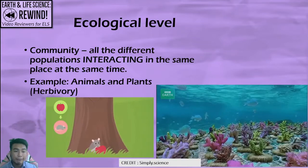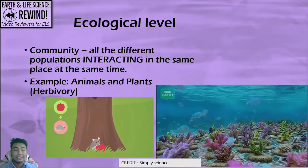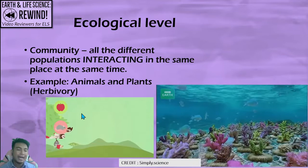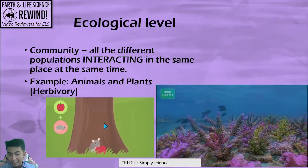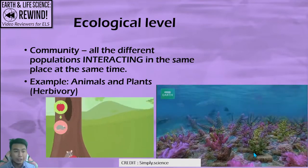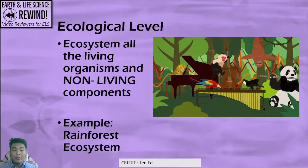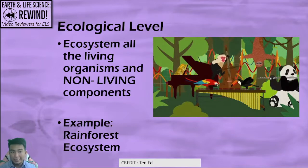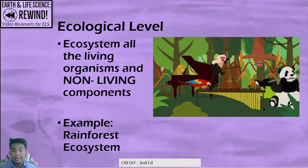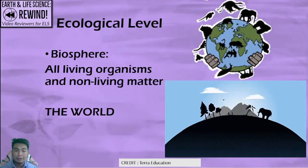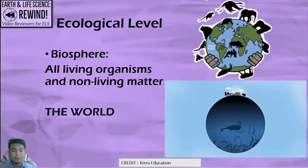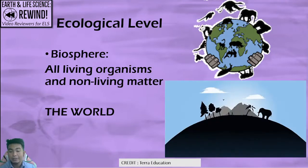Community is all the different populations interacting in the same place at the same time. Plants and animals interact with each other in a process called herbivory, where animals eat plant products. Other fishes compete with each other inside a community. When you add the non-living components, it becomes an ecosystem. Rainforests, seas, and deserts are examples. When you combine all ecosystems, you get the biosphere — all organisms and non-living matter in our world.